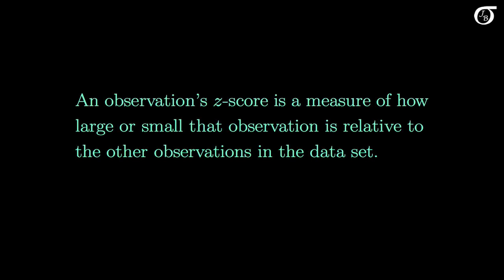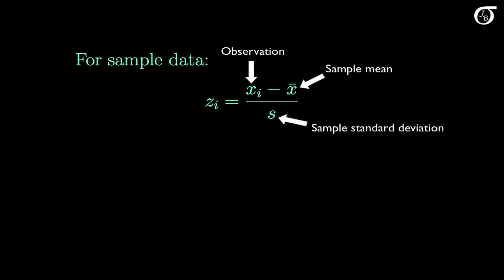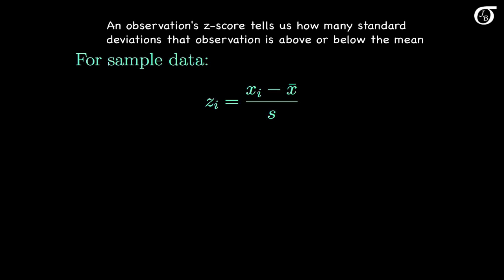An observation's z-score is a measure of how large or small that observation is relative to the other observations in a data set. For sample data, the z-score for the ith observation is equal to the value of the ith observation minus the sample mean, divided by the sample standard deviation. Every observation has a z-score associated with it, and the z-score tells us how many standard deviations an observation is above or below the mean.